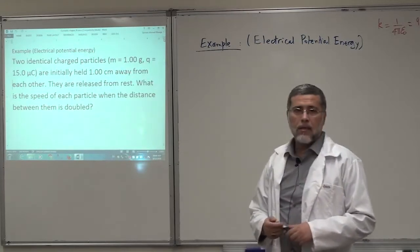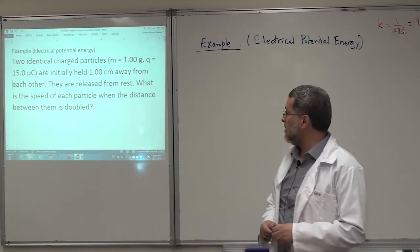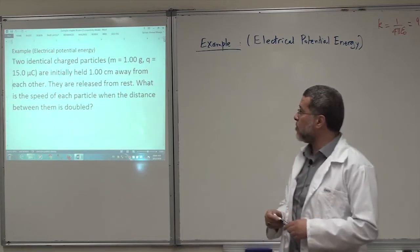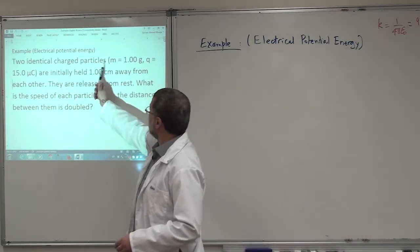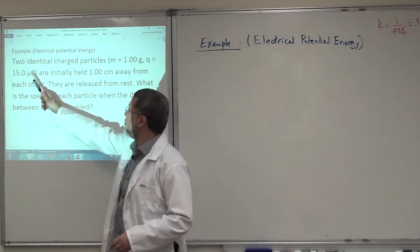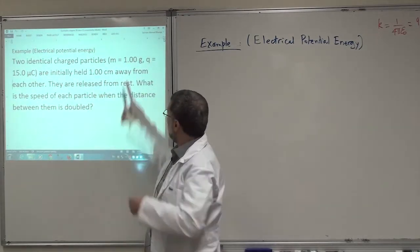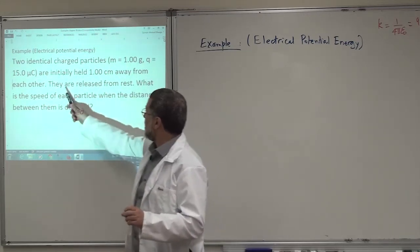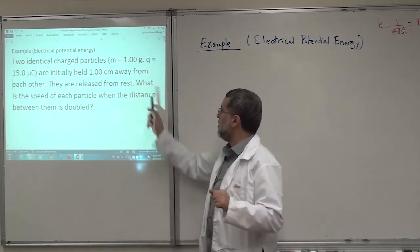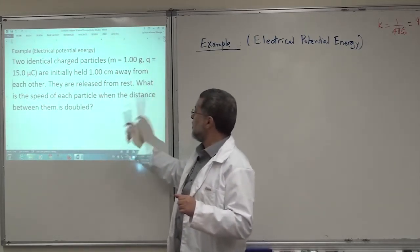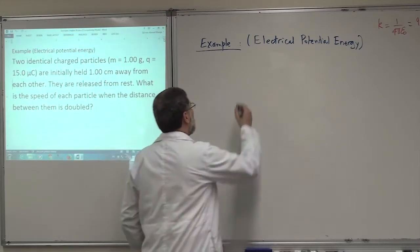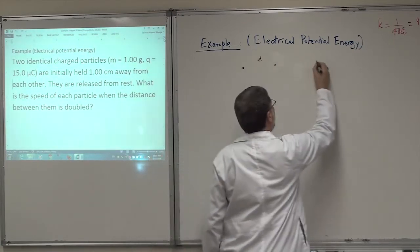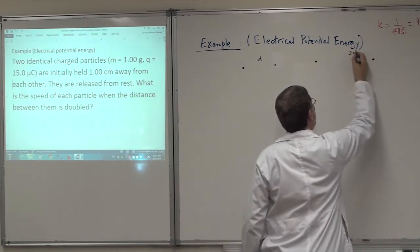This next problem is the same idea, but this time we are looking for the speed of each particle. These are exam problems. Two identical charged particles, each with charge q equal 15 µC, and a given mass — you will see why the mass is needed. They are initially held one centimeter apart and released from rest. What is the speed of each particle when the distance between them is doubled?